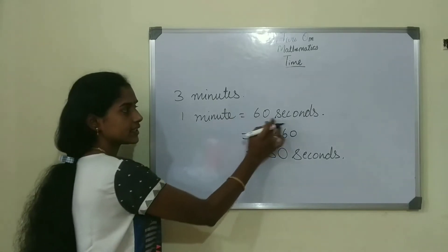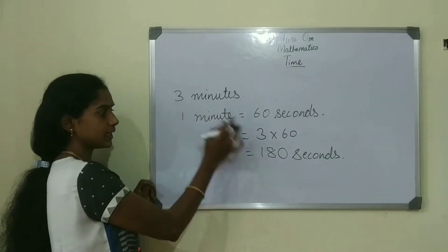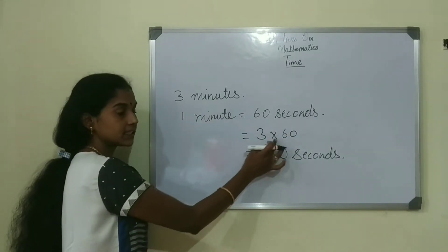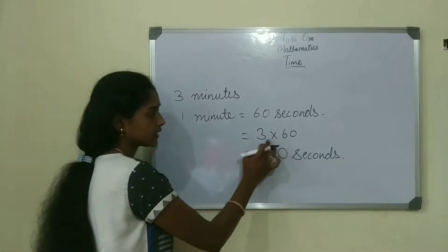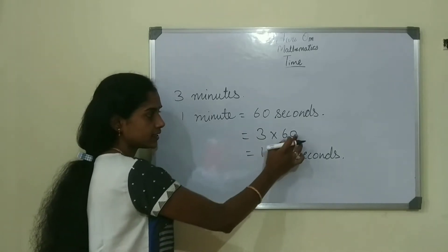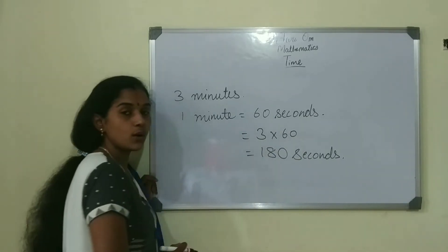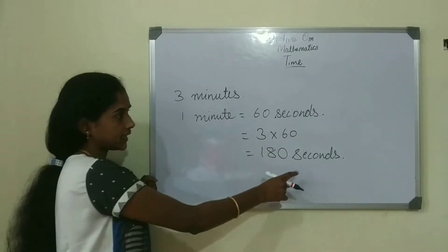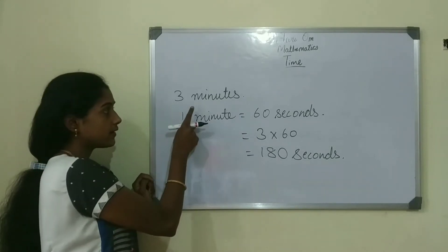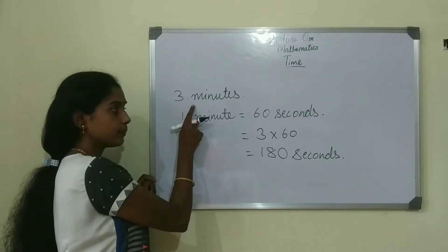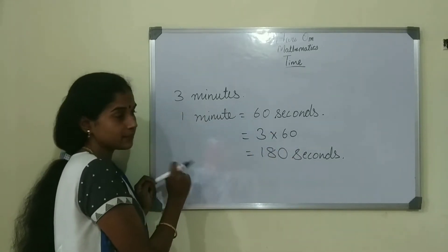1 minute is equal to 60 seconds. So 3 minutes is 3 into 60, which is 180 seconds. This is converting minutes into seconds.